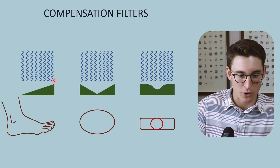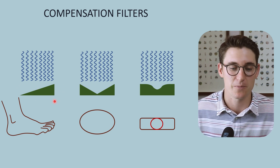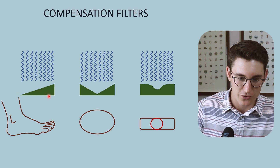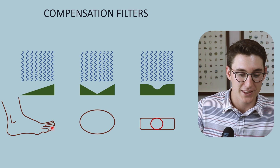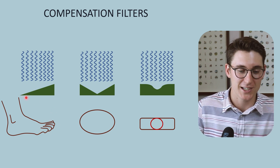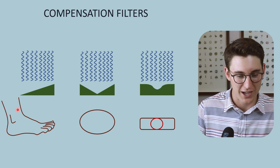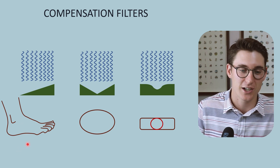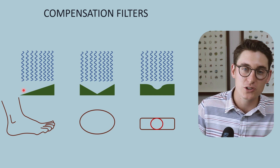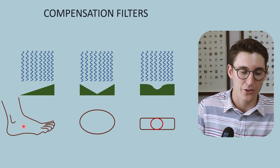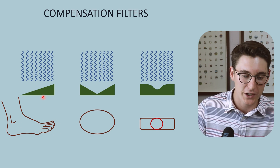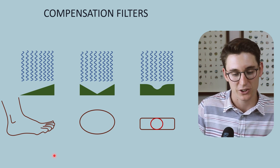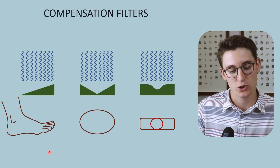We can also add a special type of added filtration known as a compensation filter or equilibrium filter, designed to produce an even exposure to our x-ray detector. A wedge filter attenuates more of the beam over the thinner part of the patient and allows more beam intensity through over the thicker part. For example, with an ankle and foot, the ankle is thicker and attenuates more x-rays. The wedge filter allows most x-rays through over the ankle and attenuates more over the thinner toes and forefoot, giving a more even exposure to the detector.